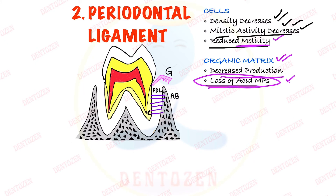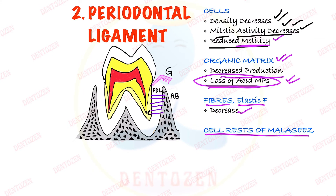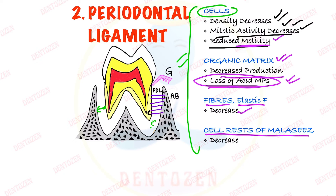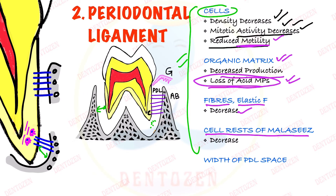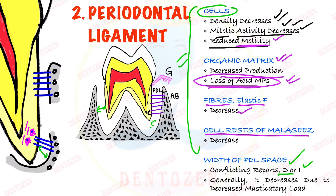The fibrous component of the periodontal ligament also decreases. Elastic fibers decrease. The cell rests of Malassez, which are remnants of Hertwig's epithelial root sheath lying in the periodontal ligament, also decrease in number with age. So we can see that everything in periodontal ligament is decreasing with age. Regarding the width of the periodontal ligament space, there are conflicting reports, but generally it is said that it decreases due to decrease in masticatory load.